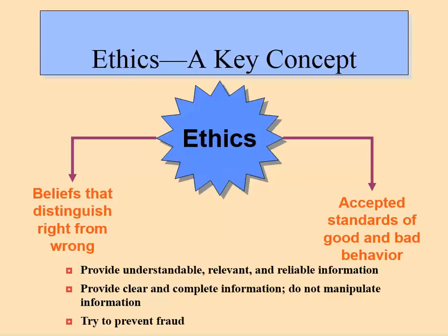The last major building block is ethics — keeping everything reliable and trusted. Basic ethics is distinguishing right from wrong and following accepted standards of good behavior. We want to make sure our accounting information is understandable, relevant, and reliable, and we try not to manipulate that information or commit fraud. There have been some notable issues with accounting ethics that we'll discuss in a moment.